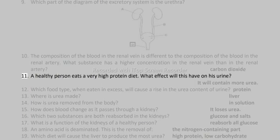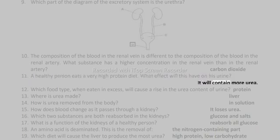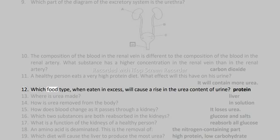Carbon dioxide. 11. A healthy person eats a very high protein diet. What effect will this have on his urine? It will contain more urea. 12. Which food type, when eaten in excess, will cause a rise in the urea content of urine?